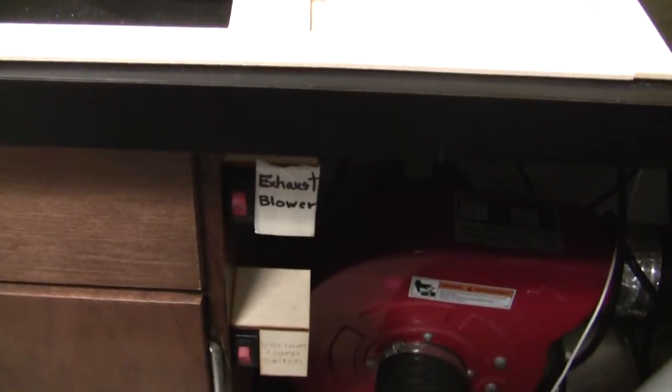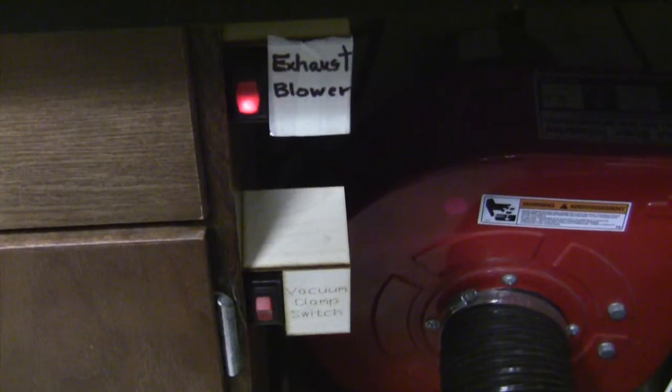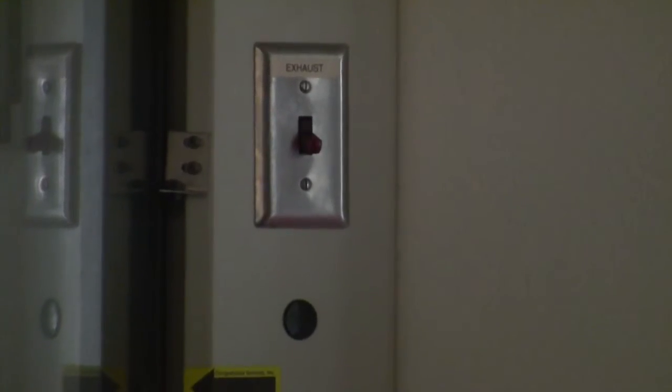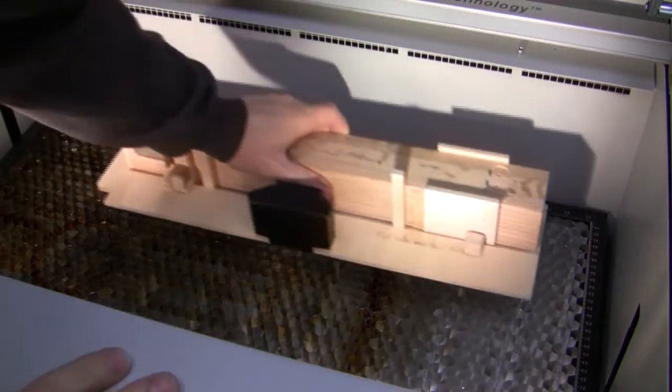Turn on the laser cutter and the switch is back here. Also turn on the upper switch, the exhaust blower there, so that should be lighted like that. Finally turn on this fume hood switch because our exhaust blower also uses that blower.